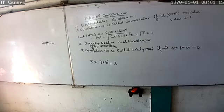A complex number is purely real when its imaginary part is zero. That is, its imaginary part equals zero. Okay.